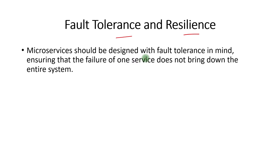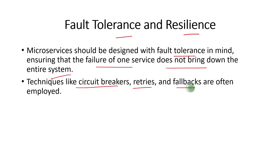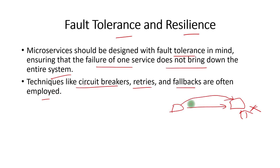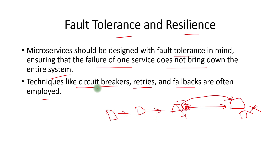The next principle is fault tolerance and resilience. Microservices should be designed with fault tolerance in mind, ensuring that failure of one service does not bring down the entire system. Techniques like circuit breakers, retries, and fallbacks are often employed. If one service calls another and something goes wrong, the calling service should be able to retry or use a fallback mechanism. The fault should be contained at that point and not cascade through the entire chain.